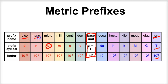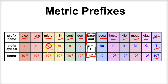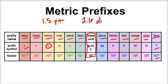It's important to memorize all these metric prefixes, understand their order and their power of ten. For example, a teacher might ask what giga means — it means 10 to the ninth, or one billion. Milli means 10 to the negative third, or one thousandth. With these prefixes we can now place them in front of SI units or derived units. For example, 1.5 pm means 1.5 picometers, and 2.6 dL means 2.6 deciliters.